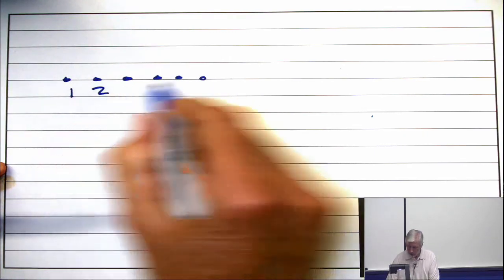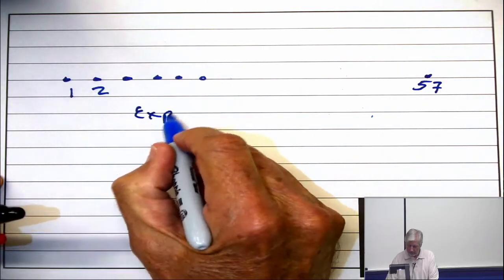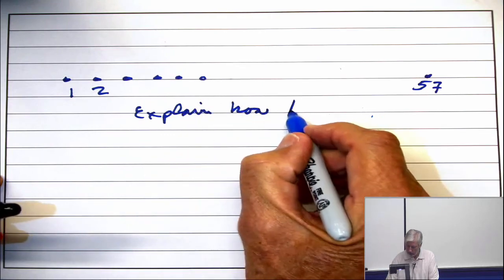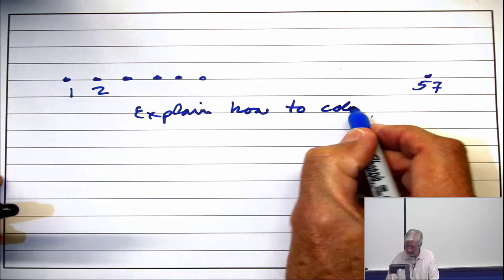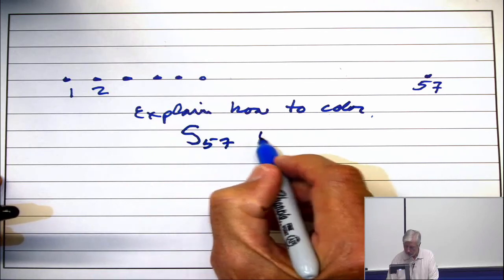1, 2 up to 57. And now explain how to color the shift graph S57 with 6 colors.